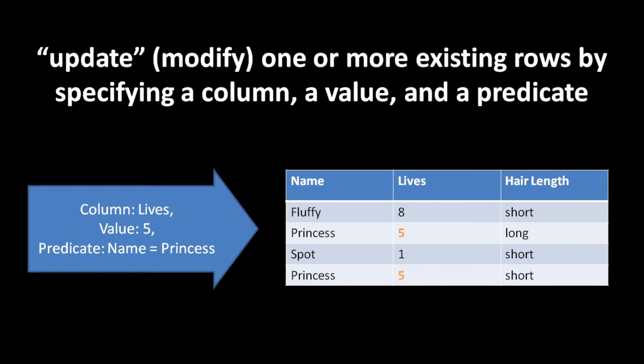So here we're updating the lives column with value 5 in all rows where the name value is Princess. Whatever number of lives those two Princess rows had before, now both have the value 5 in the lives column.